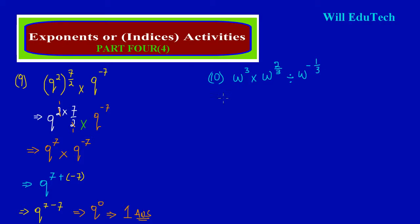Again, my friends, we have indices of the same base — the common base is W. We have base W multiplying itself, and here the base W is being divided. For the bases that are multiplying, we simply add those powers: common base W, with 3 plus 2 upon 3. And since we are dividing by W, we subtract — and we are really subtracting negative 1 upon 3.